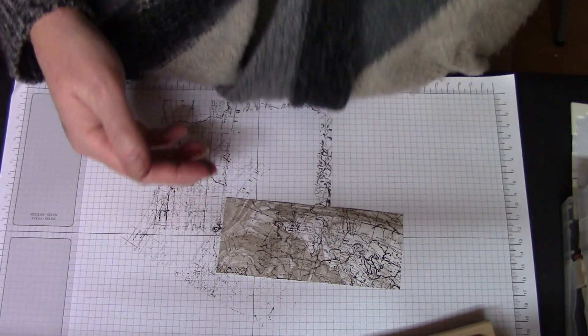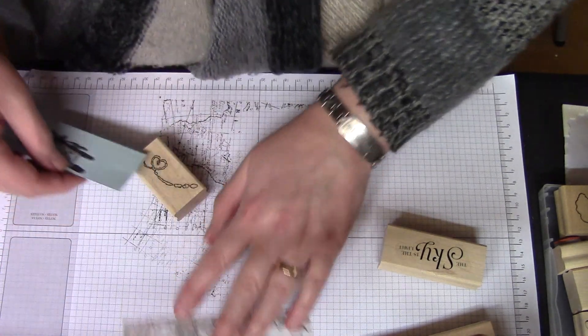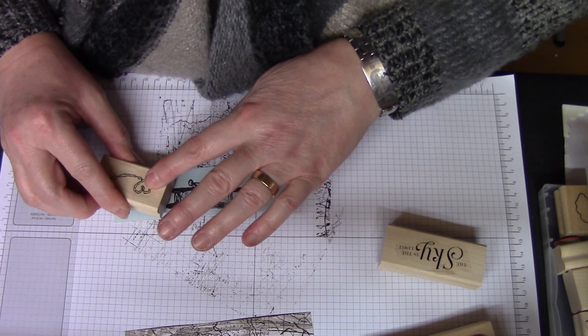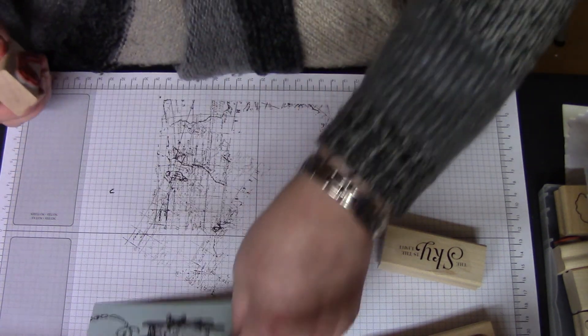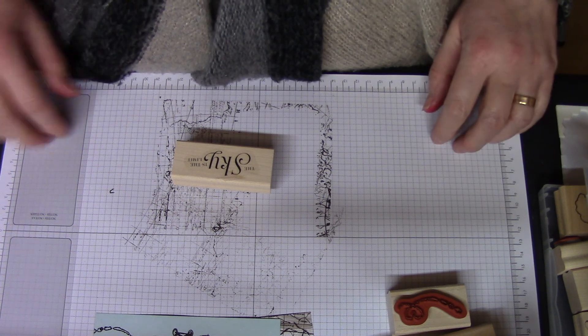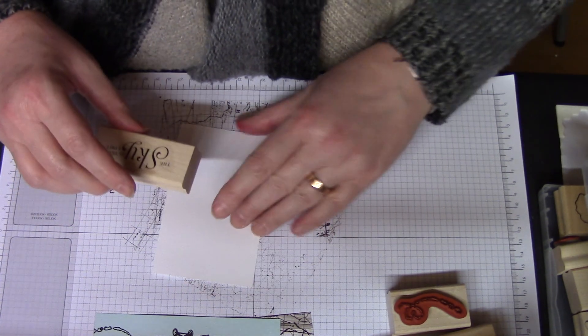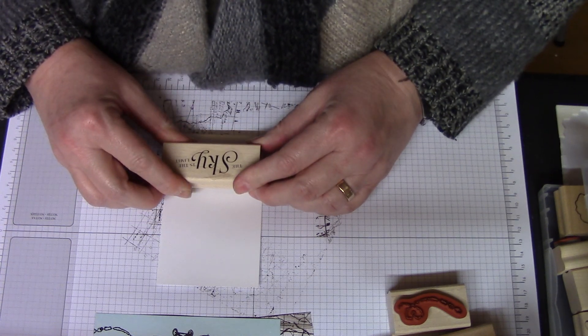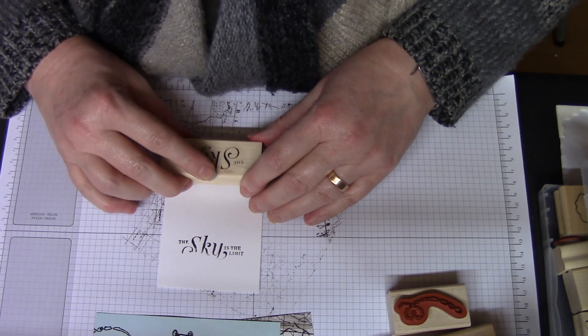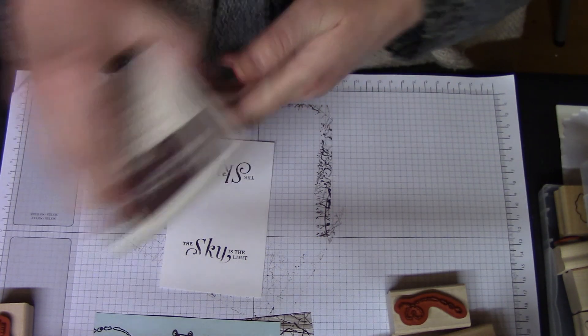The final bit of stamping is the little loopy loop bit that says it's gone and done the loop-the-loop. And let's do it with a little love heart, shall we? Lovely little loopy loop. And the Sky's the Limit, just onto a scrap of Whisper White cardstock. That's better. And that is all the stamping done.